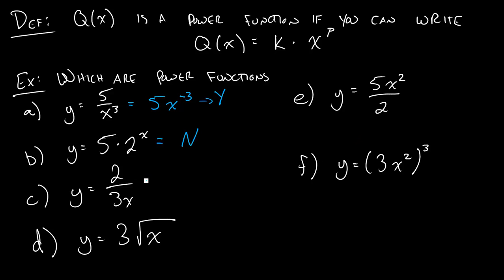Now if we come to this problem, what do we think this one might be? So let's kind of think back to number 1. How did we move that X to the negative 3 up top? Well, you can do the same thing with this X here. This is really 2 thirds X to the negative 1, so K would be 2 thirds, P would be negative 1, and that would be a power function.